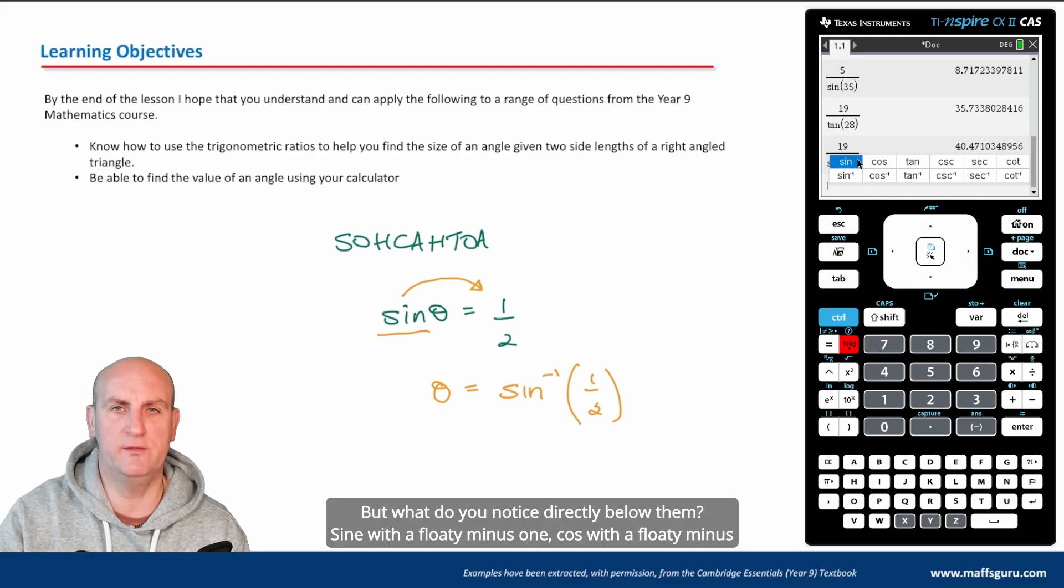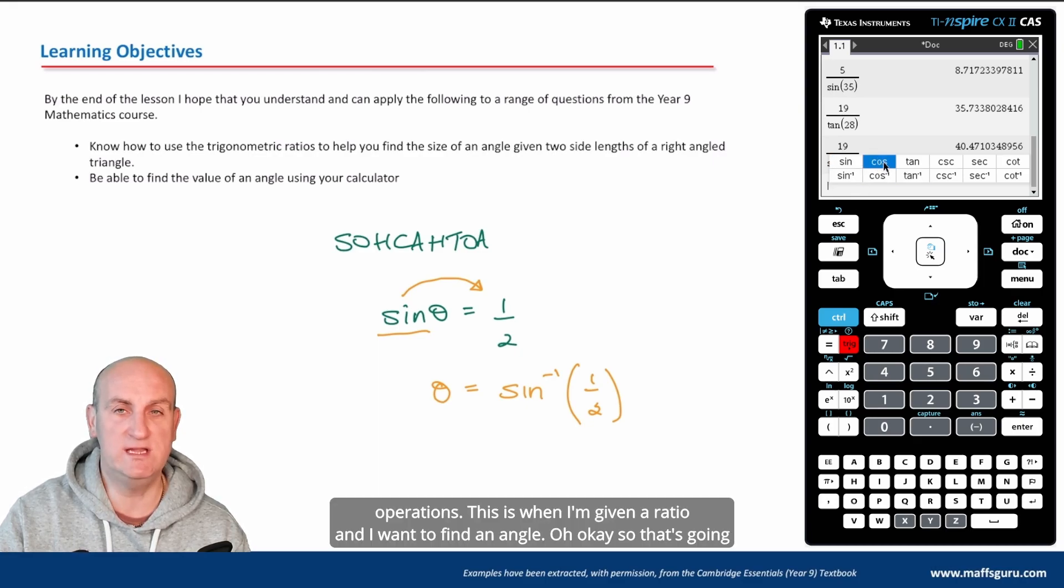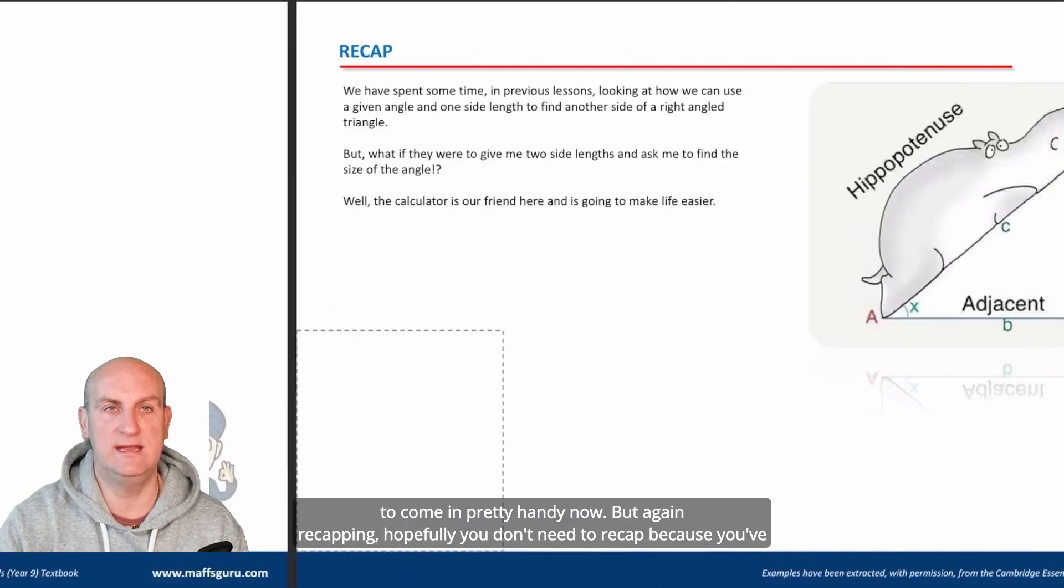But what do you notice directly below them? Sine with a floaty minus one, cos with a floaty minus one, and tan with a minus floaty one. So these are our reverse operations, our inverse operations. This is when I'm given a ratio and I want to find an angle. Okay, so that's going to come in pretty handy now.